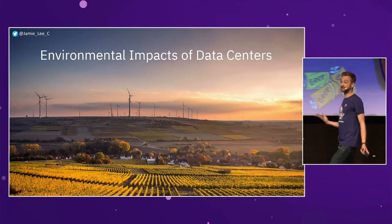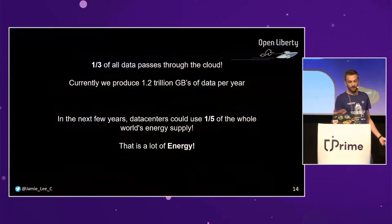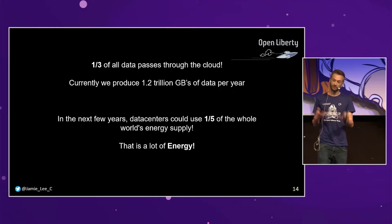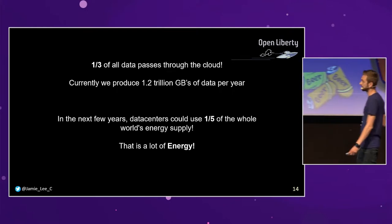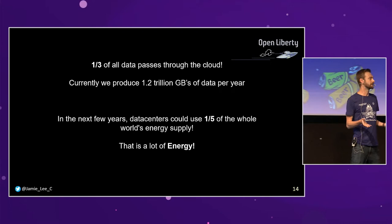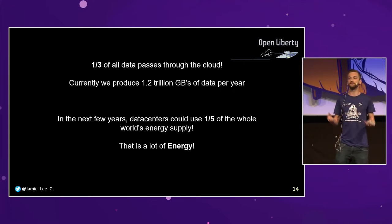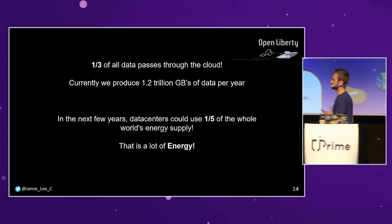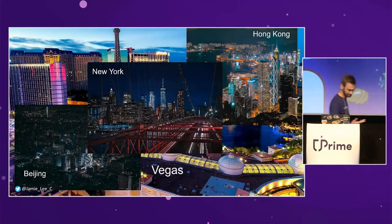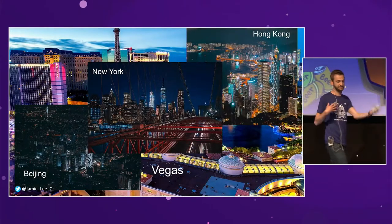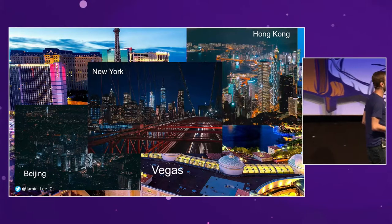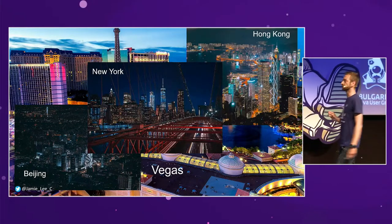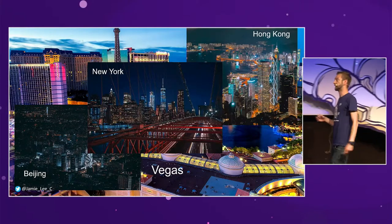What are some of the environmental impacts of these data centers? One third of all data currently passes through the cloud. We produce around 1.2 trillion gigabytes of data per year. And in the next years, they're predicting that data centers will consume one fifth of all the energy we use on the whole planet. You look at cities like Las Vegas, Hong Kong, and New York that are lit up crazily — and that's a tiny amount of energy compared to what the data centers and cloud providers are using.